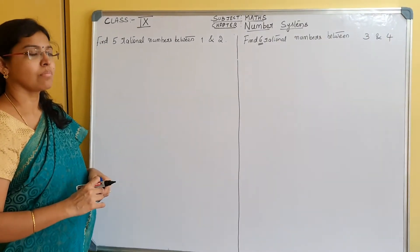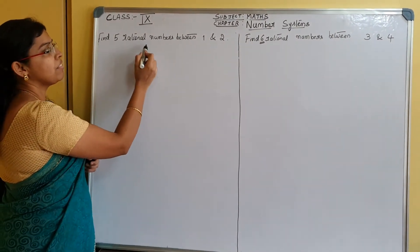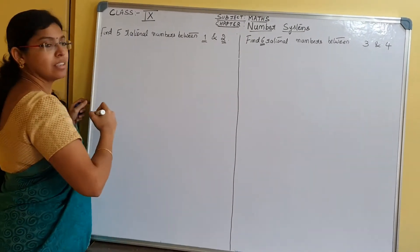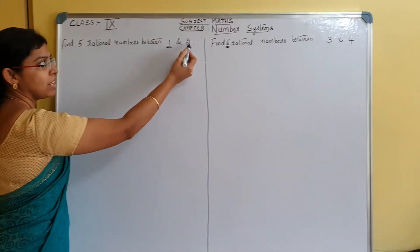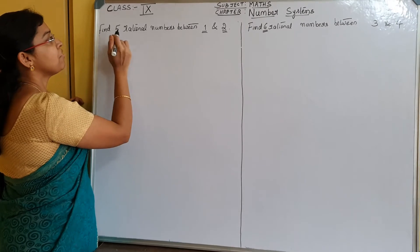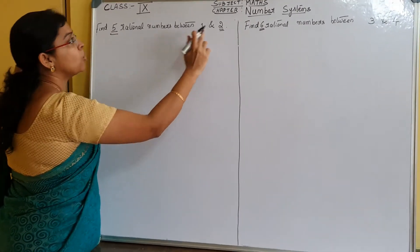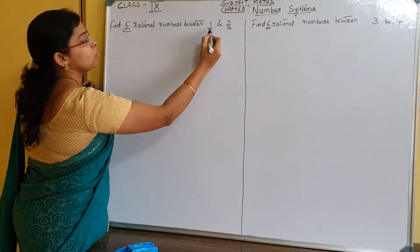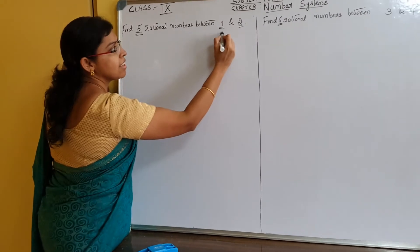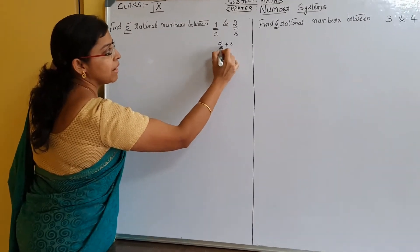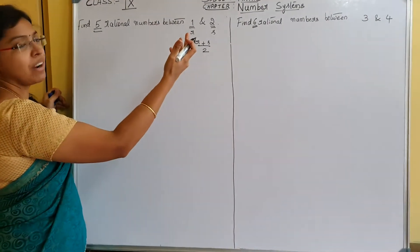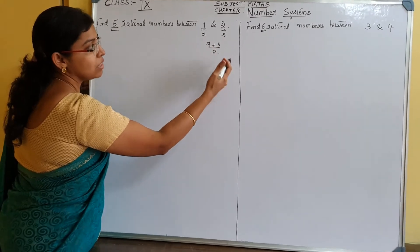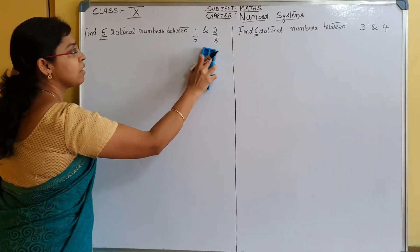Here we have to find 5 rational numbers between 1 and 2. These are whole numbers but can also be written as rational numbers: 1 by 1 and 2 by 1. There are generally 2 methods. Using R plus S by 2 gives the midpoint, and finding mid values repeatedly gives rational numbers. But there is an easy method since we need specifically 5 rational numbers.